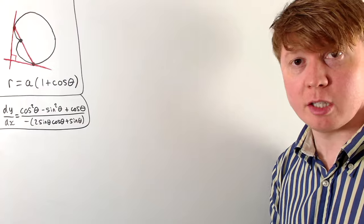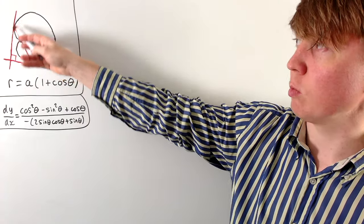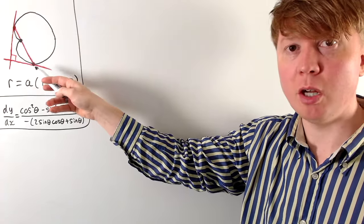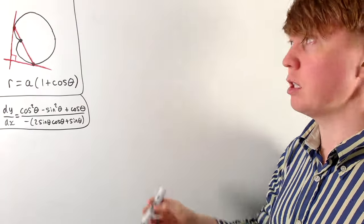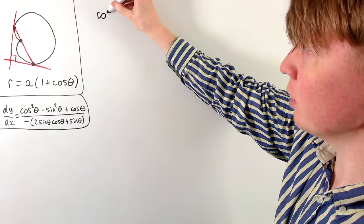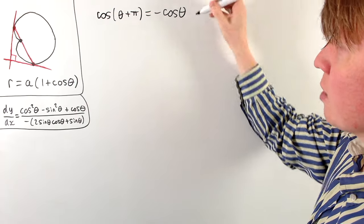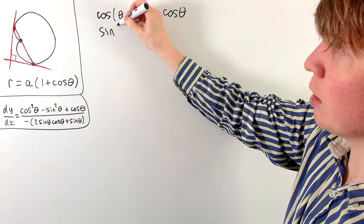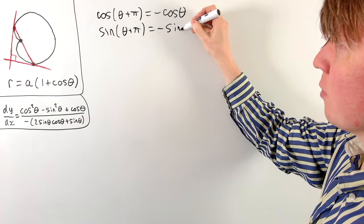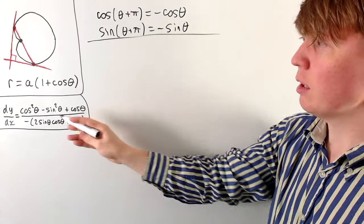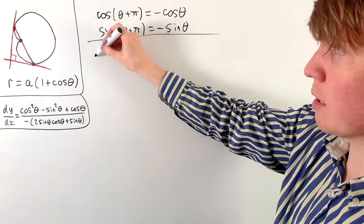Now we want the gradient at θ + π, the other end of the chord. We've already seen that cos(θ + π) equals −cos θ, and similarly sin(θ + π) equals −sin θ. Substituting in, the squared terms' negatives cancel, so the numerator becomes cos²θ − sin²θ − cos θ. In the denominator, the 2 sin θ cos θ term is unchanged, but we now have +sin θ instead of −sin θ in the bracket.